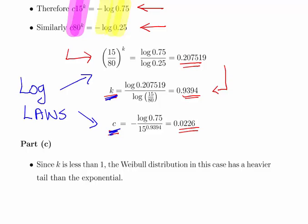Now, if K is less than one, that means that the Weibull distribution has a heavier tail than the exponential, which is to sort of say that under the Weibull distribution, there's a heavier tail.